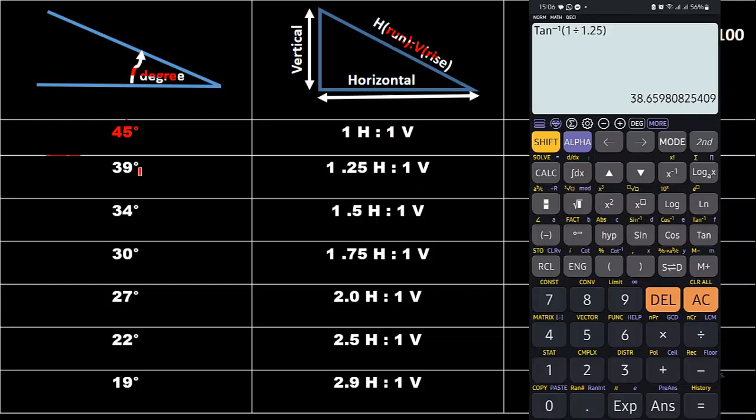Similarly, if you convert 39 degrees or if you convert this ratio into degrees, you will use the same trigonometric formula that is tan inverse of 1 divided by 1.25, that is vertical divided by horizontal. Slope is the ratio of vertical to the horizontal. You will get the answer 39 degrees.